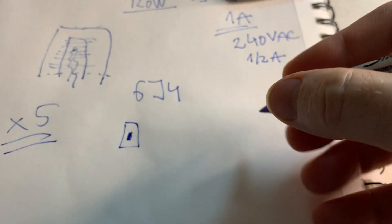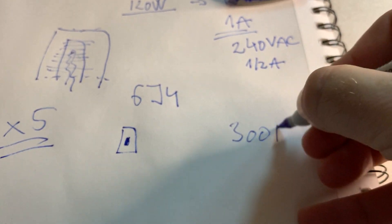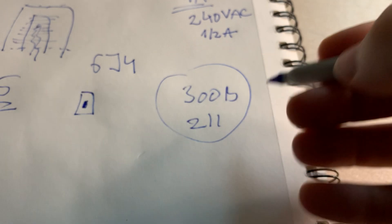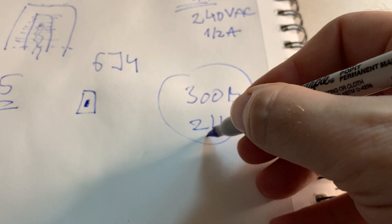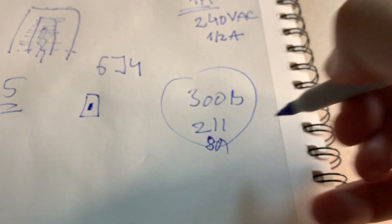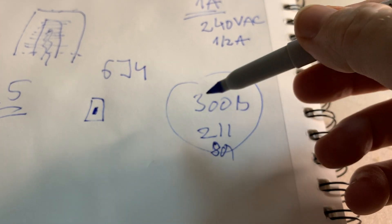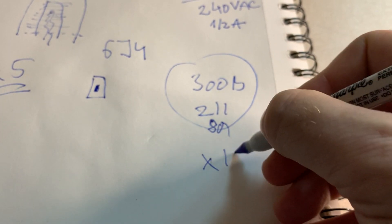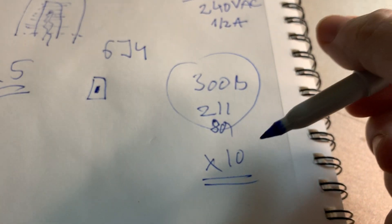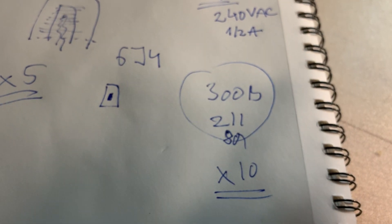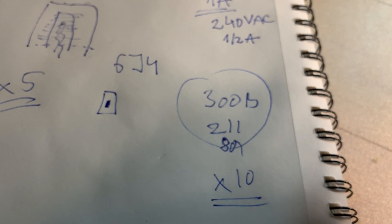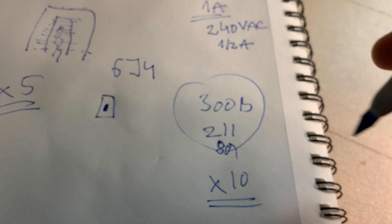If you have vacuum tubes like a 300B, 211, or other tubes like the type 10, 801, and others, which use thoriated tungsten filaments, the turn on current can be 10 times the normal operational current draw for those filaments.